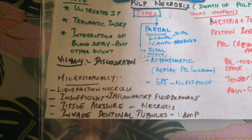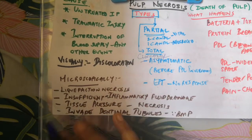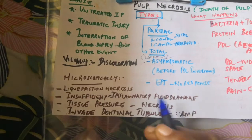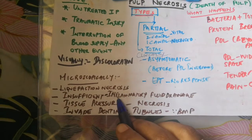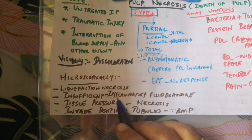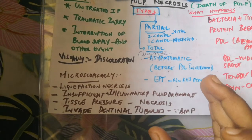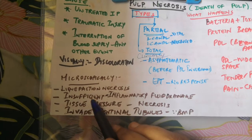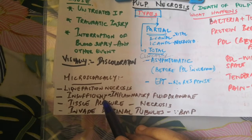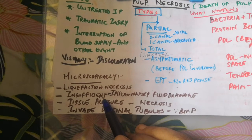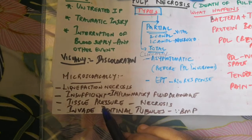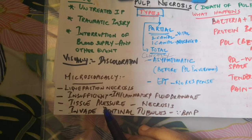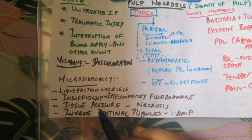Microscopically, you will see a necrosed area called liquefaction necrosis, which occurs due to cellular degeneration of the tissue. Because the canal is a closed chamber bounded by dentin, there is insufficient space for drainage of inflammatory exudates, causing tissue pressure to rise and driving the necrosis.